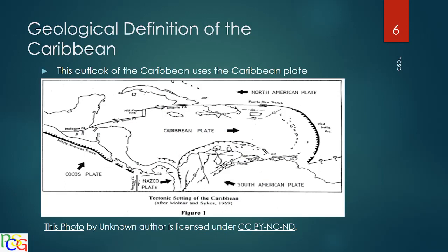Here is the geological definition of the Caribbean. This definition uses the Caribbean plate. As you can see, the Caribbean plate is in the middle and goes around. If you use this definition to define the Caribbean, you will be leaving out quite a few places that we would actually consider to be Caribbean, because the North American plate collides with the Caribbean plate up top and that wouldn't include the Greater Antilles.